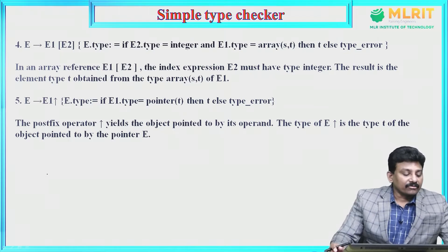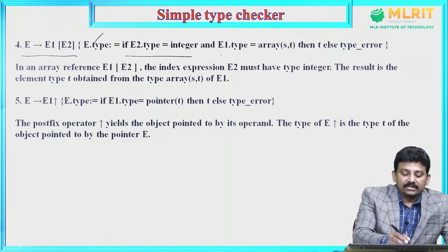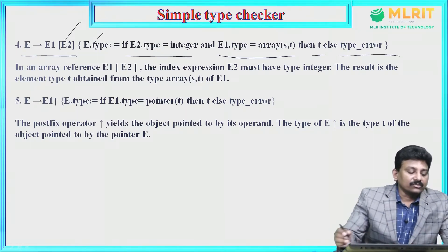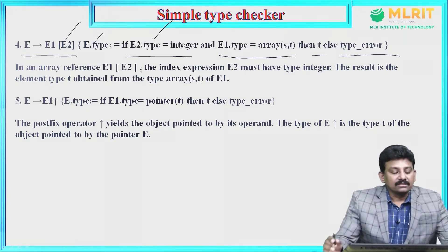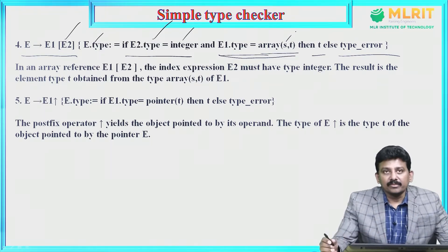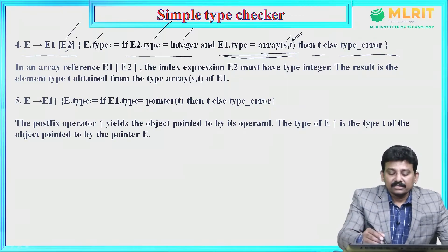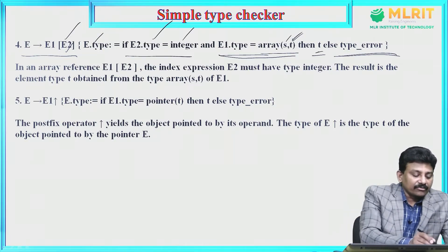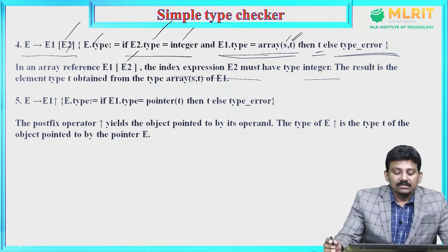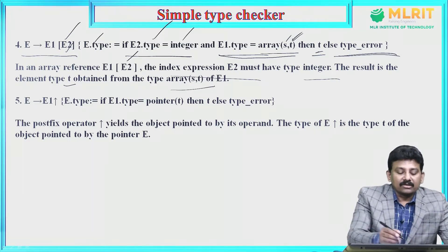Then, E derives E1[E2], that is array. E.type = if E2.type is integer, then E1.type = array(s, t), else type_error. The expression E2 within the bracket must give type integer. Then E1.type is array of s comma t, where s is the range of elements and t is the type of elements. In an array reference E1[E2], the index expression E2 must have type integer, and the result is element type t.